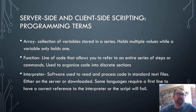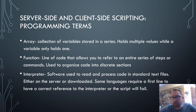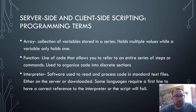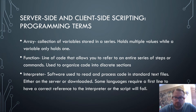An array is a collection of variables stored in a series — it holds multiple values while a variable only holds one. A function is a line of code that allows you to refer to an entire series of steps or commands, used to organize code into discrete sections. An interpreter is software used to read and process code in standard text files, either on the server or downloaded. Some languages require the first line to have the correct reference to the interpreter, or the script will fail.